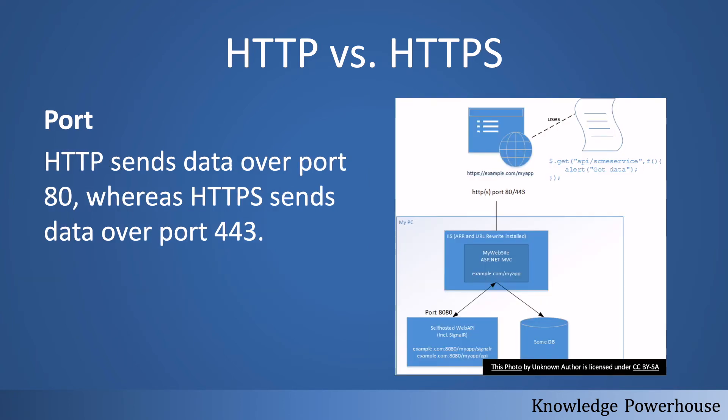At the port level, HTTP uses port 80, which is a pretty open port on most machines. HTTPS uses port 443 to send data. This is a minor but good-to-know difference regarding what kind of port each protocol uses.